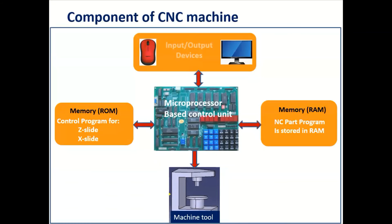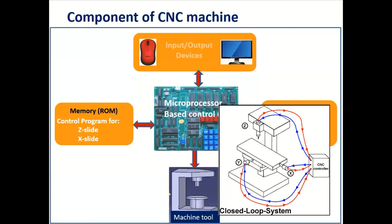Regarding the machine control unit and machine tool: the machine tool is operated by the control unit. The machine tool receives signals from the machine control unit — that is through the microprocessor — and the signals are understood by the machine spindle, table, and other parts like the motors and controls. The control unit gives signals to the various parts of the machine: to the spindle, to the table, and to other drives.